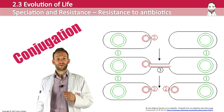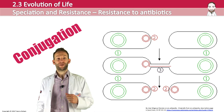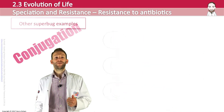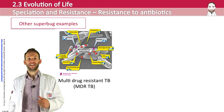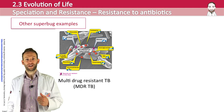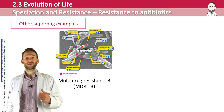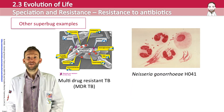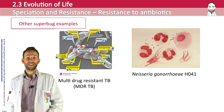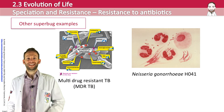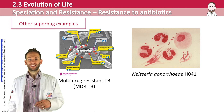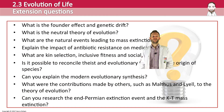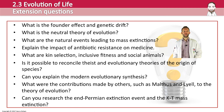Two other major superbugs: multi-drug resistant TB (MDR-TB) occurs when the bacterium Mycobacterium tuberculosis is resistant to the two most powerful first-line drugs used to treat tuberculosis. Neisseria gonorrhoeae H041 is a resistant strain of the bacterium that causes the sexually transmitted disease gonorrhea, which is resistant to ceftriaxone. There are some really good extension questions here for you to go and research to expand your knowledge on this topic.